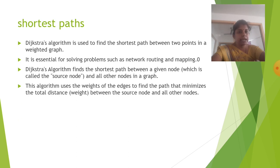Then shortest paths. Dijkstra's algorithm is used to find the shortest path between two points in a weighted graph. It is essential for solving problems such as network routing and mapping. Dijkstra's algorithm finds the shortest path between a given node and all other nodes in a graph. This algorithm uses the weights of the edges to find the path that minimizes the total distance between the source node and all other nodes.